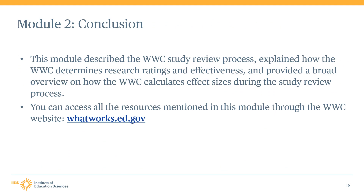This concludes the second module in the WWC Group Design Standards Training. We described each of the steps in the WWC study review process, explained how the WWC determines research ratings for study findings and a study-level research rating, described how the WWC determines effectiveness ratings, and provided a high-level overview of how the WWC calculates effect sizes during the study review process. Remember that you can access all of the resources mentioned in this module on the WWC website, whatworks.ed.gov.